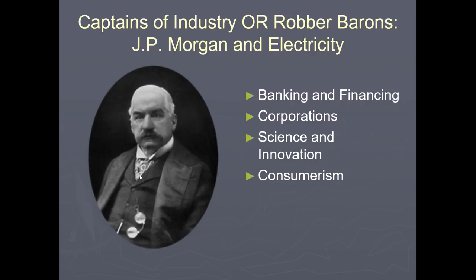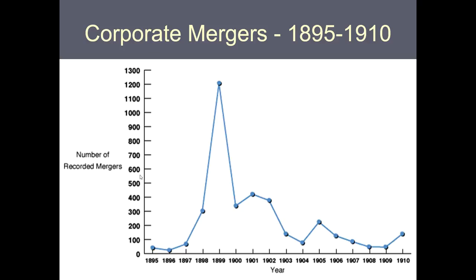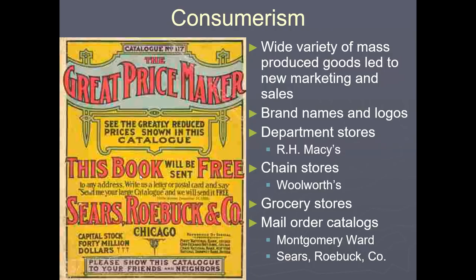J.P. Morgan held power in the banking industry and later bought Carnegie Steel and turned it into the U.S. Steel Corporation. Companies we've discussed include General Electric, U.S. Steel, and AT&T — the American Telephone and Telegraph Corporation — which was a J.P. Morgan company formed from a merger of Alexander Graham Bell's communication companies. You can see corporate mergers spiked in 1900, and then as the Sherman Antitrust Act was enforced, that number dwindled down.